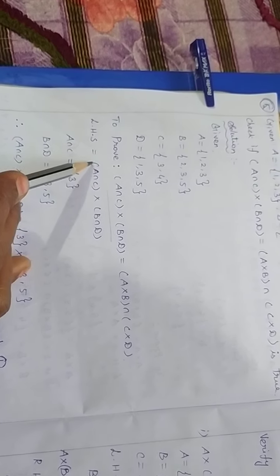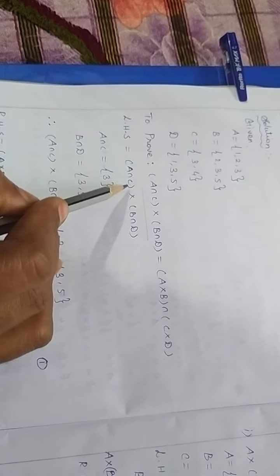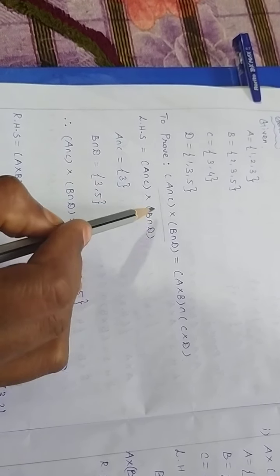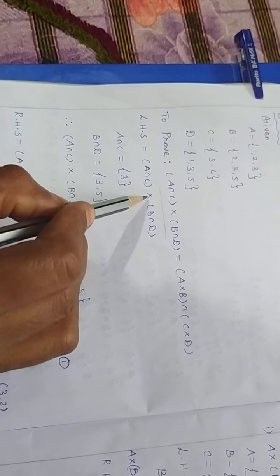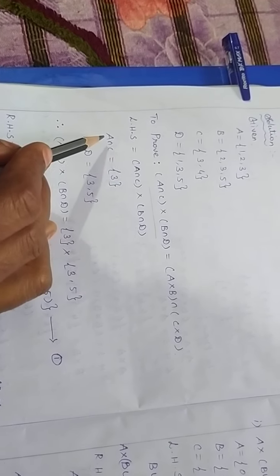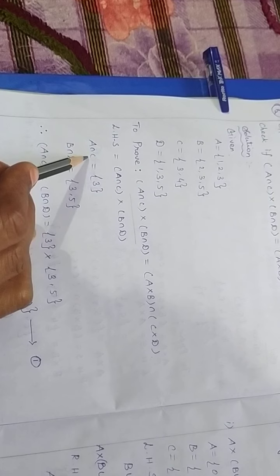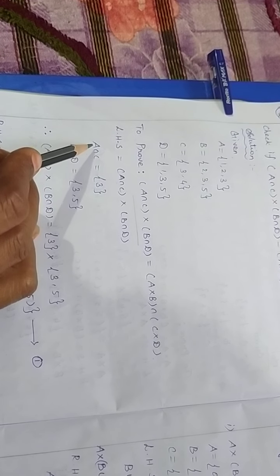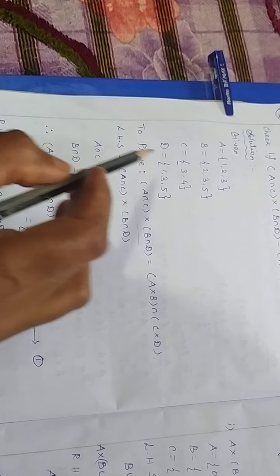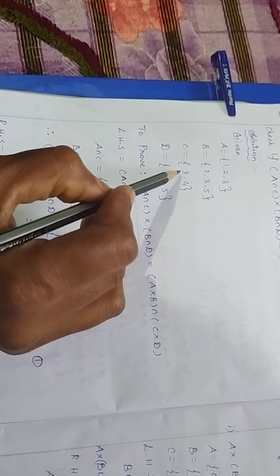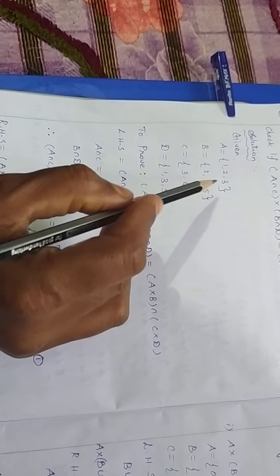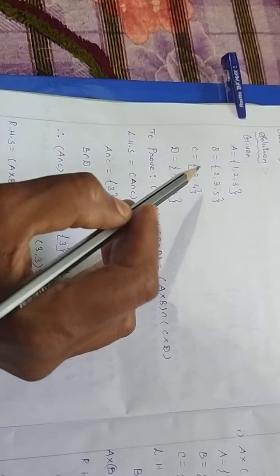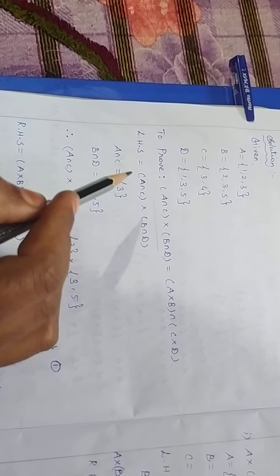First, we have to find A ∩ C. Intersection means only common elements in A and C. A is {1, 2, 3} and C is {3, 4}. The element 3 is the only common element in both sets. So A ∩ C = {3}.